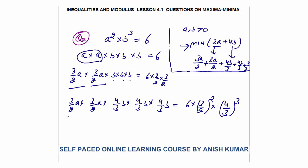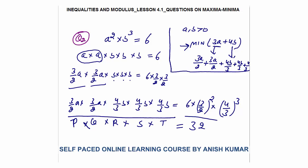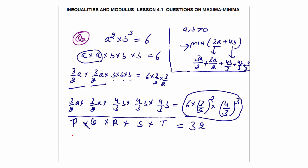These are five terms — call them p, q, r, s, t. Their product p × q × r × s × t equals 32 (solving gives 32). The product of five positive real numbers is constant, so their sum p + q + r + s + t is minimum when all are equal. Equal numbers whose product is 32: 2 × 2 × 2 × 2 × 2 = 32, so each equals 2.